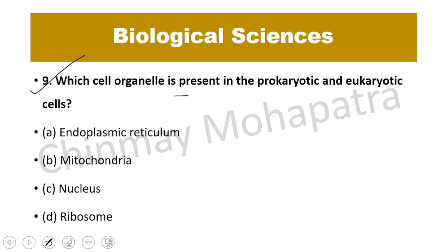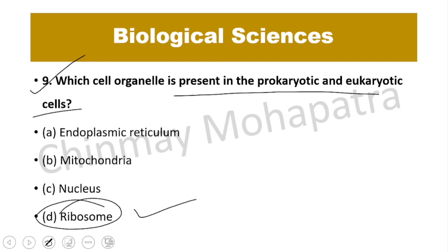Question number 9: Which cell organelle is present in both prokaryotic and eukaryotic cells? The answer is ribosomes, which help in protein synthesis. In prokaryotes the ribosome type is 70S, and in eukaryotes it is 80S.